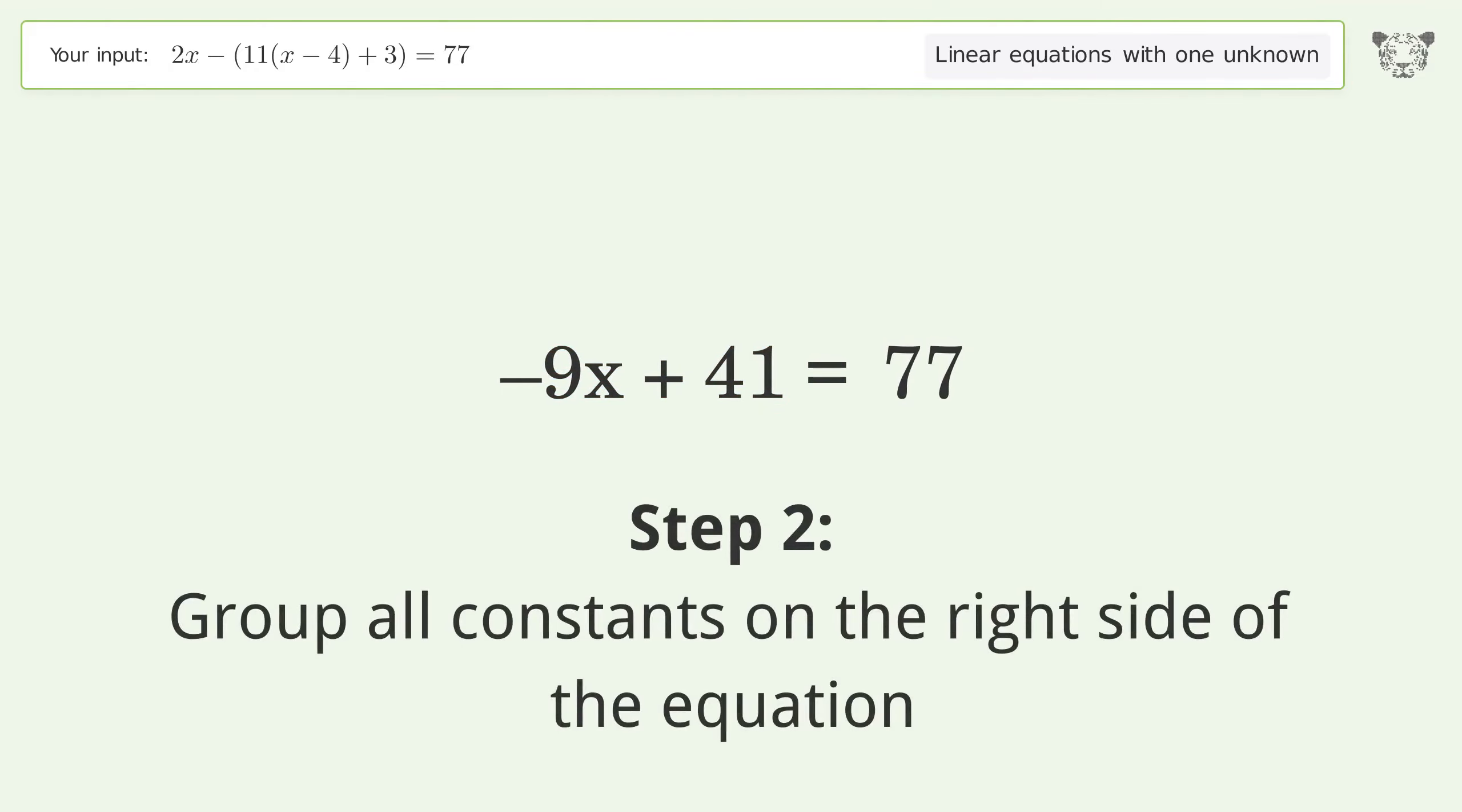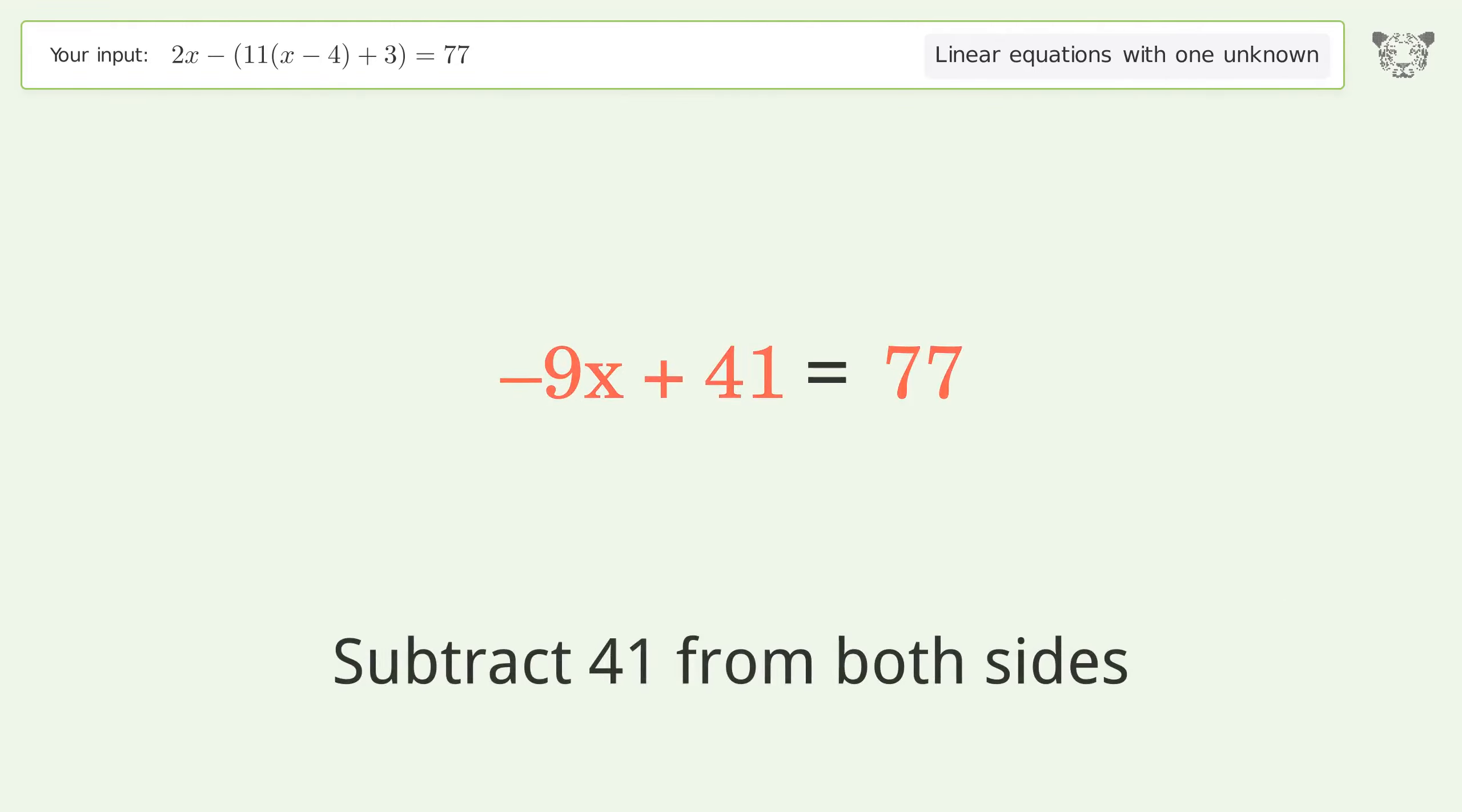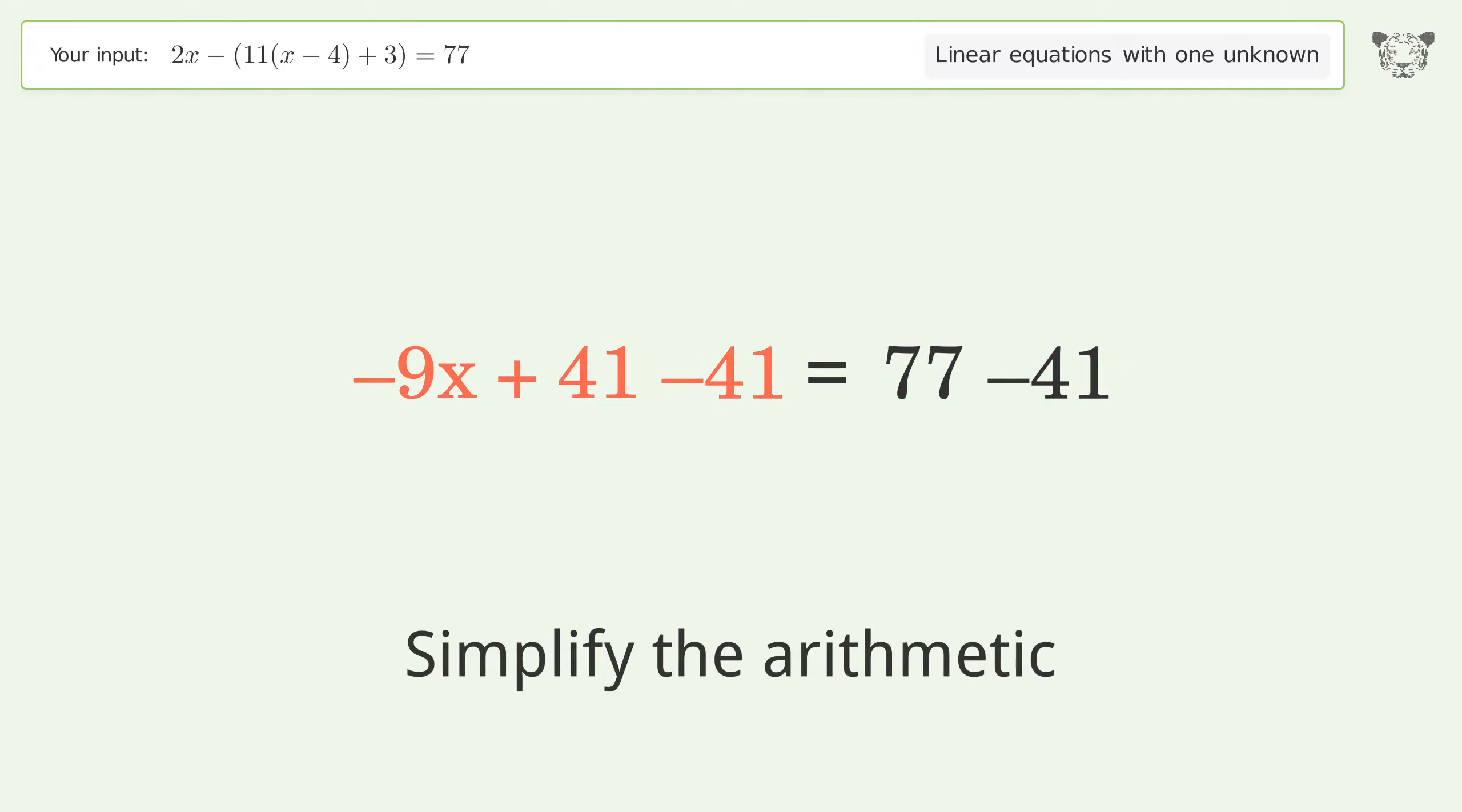Group all constants on the right side of the equation. Subtract 41 from both sides, simplify the arithmetic.